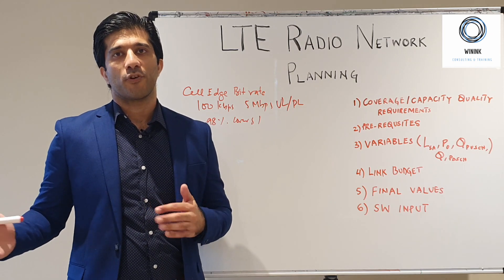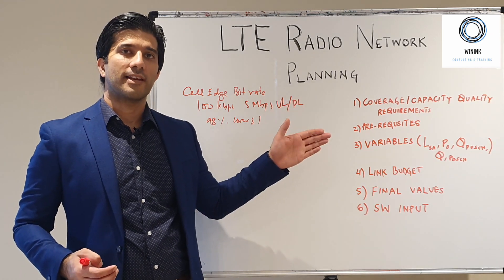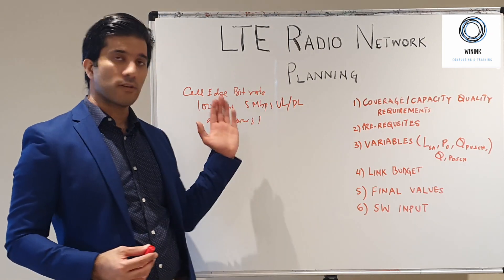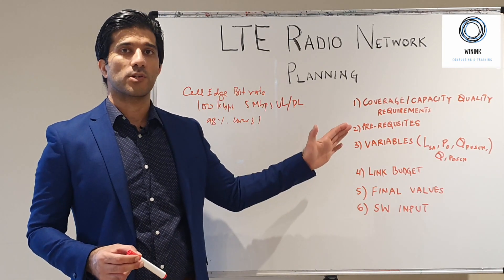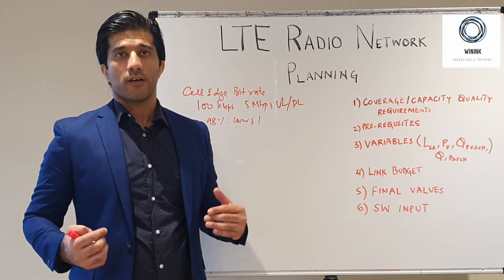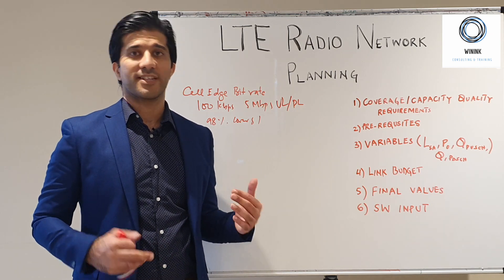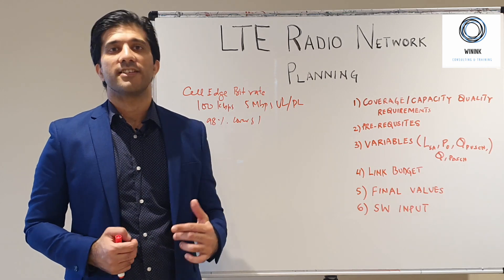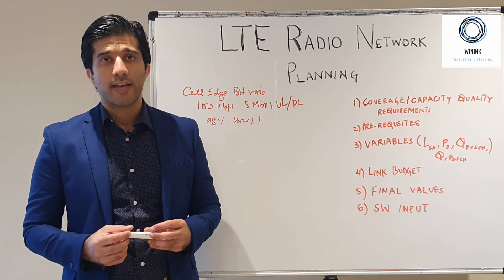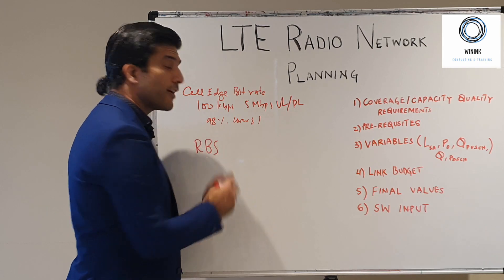Throughout all of your planning phase — whether you are doing deployment or basic network maintenance — these coverage and quality requirements will direct how you dimension or plan your network. As ongoing requirements change, you can update them as well. For example, if you are going for a capacity increase or further improvement in coverage, you can change these requirements. But these are the guiding principles and you need these values to plan the network.